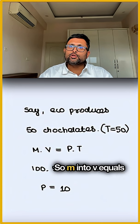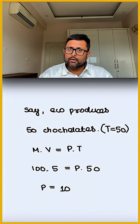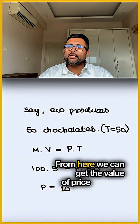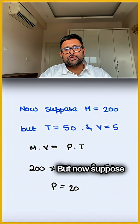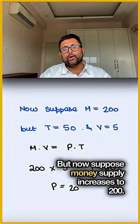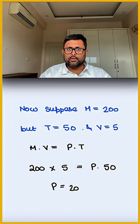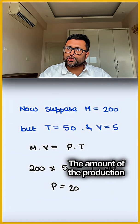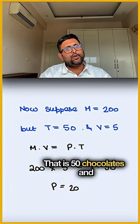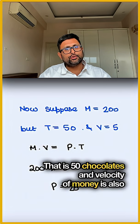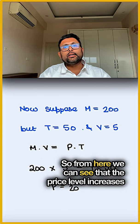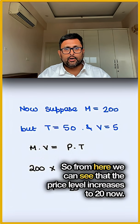Using M × V = P × T, we can get the value of price as equal to 10. Now suppose money supply increases to 200, with everything else remaining the same — the amount of production is still 50 chocolates and velocity of money is also the same. From here, we can see that the price level increases to 20.